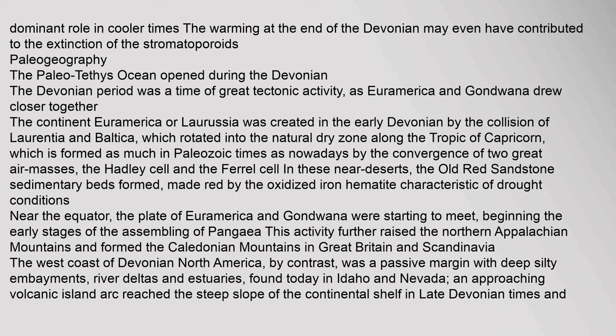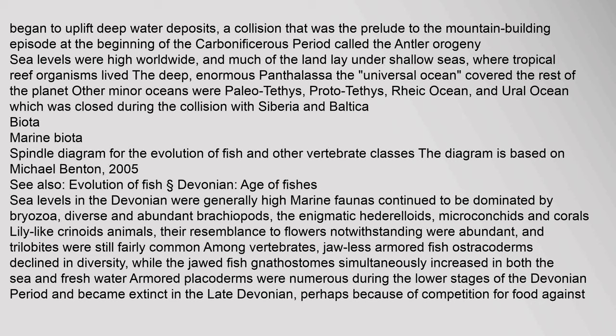Near the equator, the plates of Euramerica and Gondwana were starting to meet, beginning the early stages of the assembling of Pangaea. This activity further raised the northern Appalachian Mountains and formed the Caledonian Mountains in Great Britain and Scandinavia. The west coast of Devonian North America, by contrast, was a passive margin with deep silty embayments, river deltas, and estuaries, found today in Idaho and Nevada. An approaching volcanic island arc reached the steep slope of the continental shelf in late Devonian times and began to uplift deep water deposits — a collision that was the prelude to the Antler Orogeny. Sea levels were high worldwide, and much of the land lay under shallow seas, where tropical reef organisms lived.